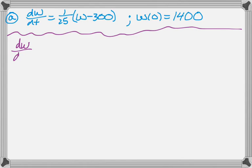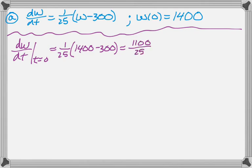And so the first thing I need is dw/dt at t equals 0, which is going to be 1/25, and then plug in the 1400 that we're given minus 300, and that will give us 1100 over 25. You could actually leave it there, but you know that there are 4 25s in every 100, so it's going to be 44. It just makes it a little easier to do what we need.